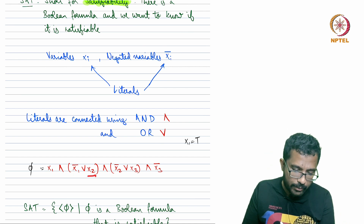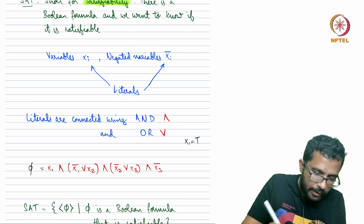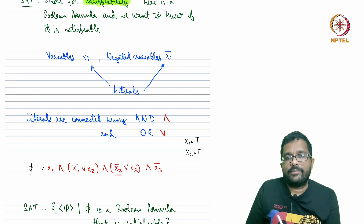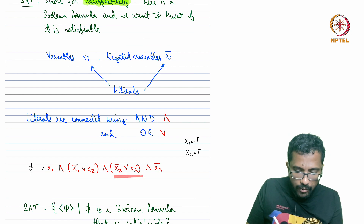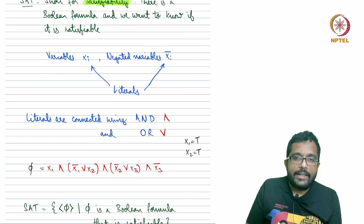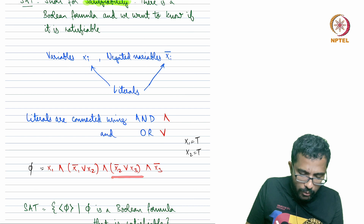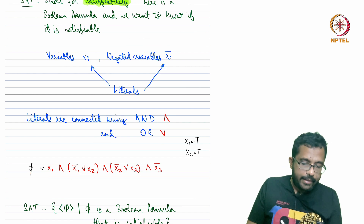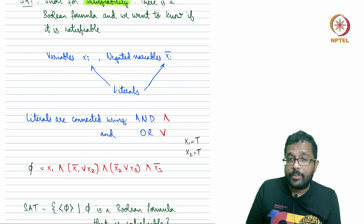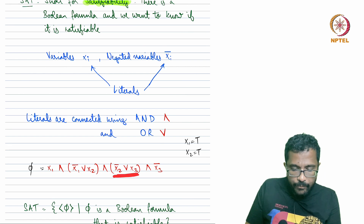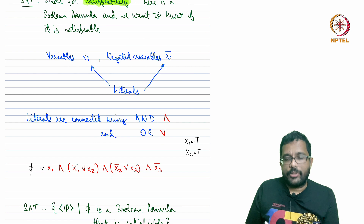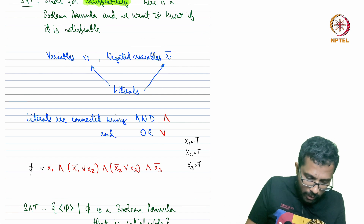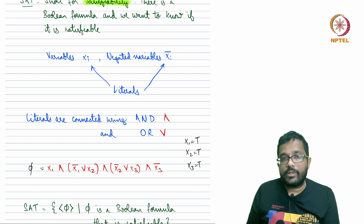Since x1 complement is false, x2 must necessarily be true for the clause x1 complement OR x2 to be true. Now since x2 is true, x2 complement is false. So for x2 complement OR x3 to be true, x3 must also be true. From the first three clauses, x1, x2, and x3 all have to be true for phi to be true.